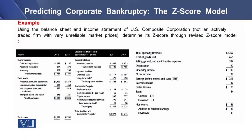On the screen, you can see an example using the balance sheet and income statement of U.S. Composite Corporation, which is not an actively traded firm with very unreliable market prices. We need to determine its Z-score through the revised Z-score model. We have a comparative balance sheet on the left part of the screen and an income statement on the right side. The balance sheet is for 2014 and 2015, whereas the income statement is for 2015. We will be using the revised Z-score model as the firm is privately owned and not actively traded.